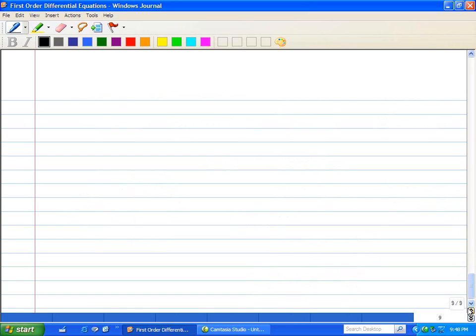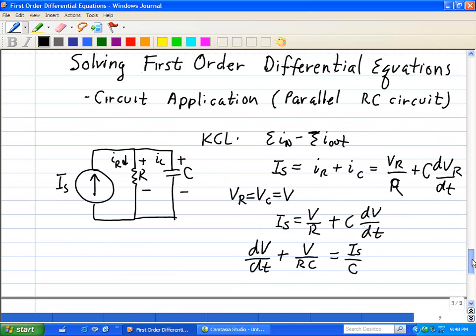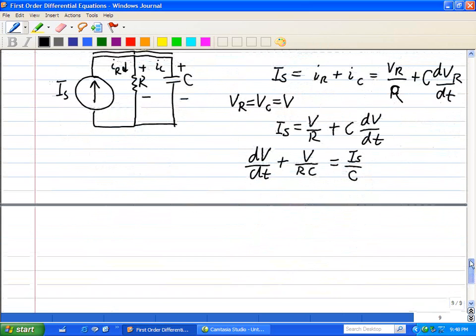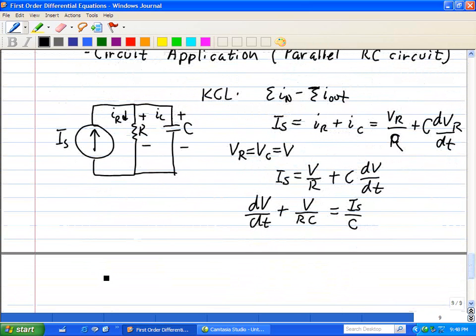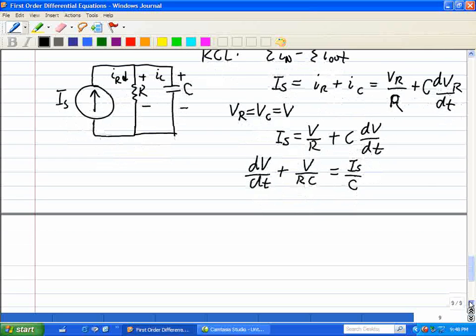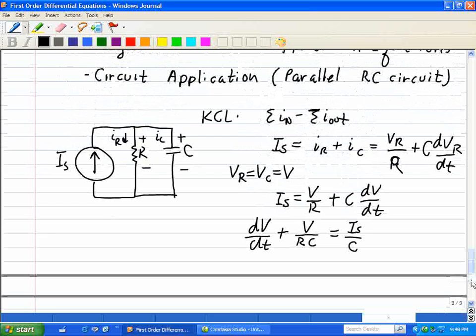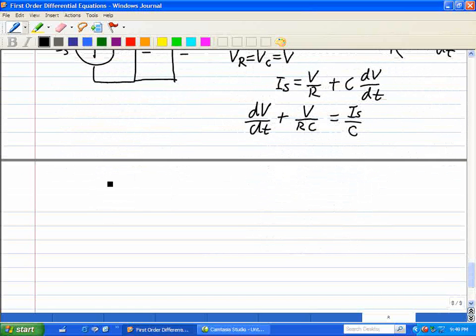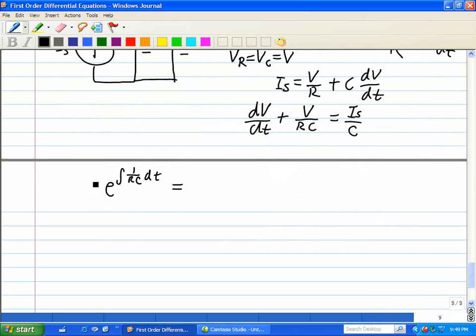Now we can solve this first order equation using the same techniques. Here we need to find the integration factor. In this case, our integration factor is E integrate 1 over RC dt, and so our integration factor is E to the T over RC.